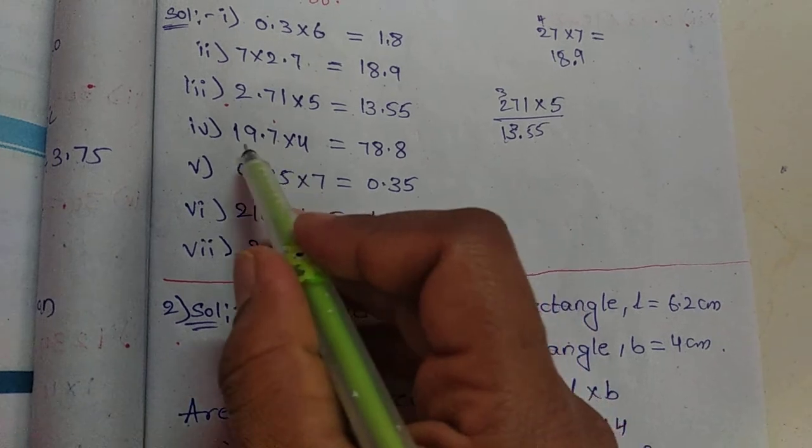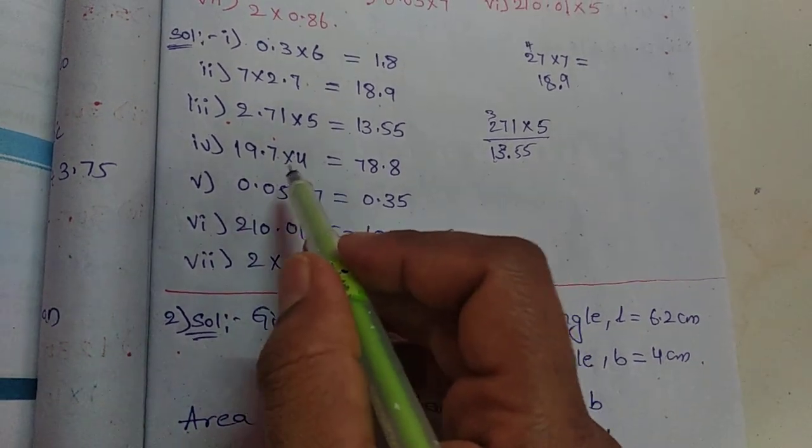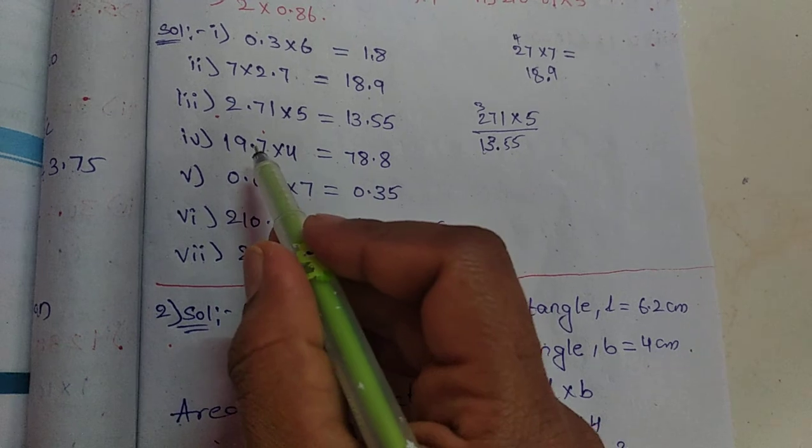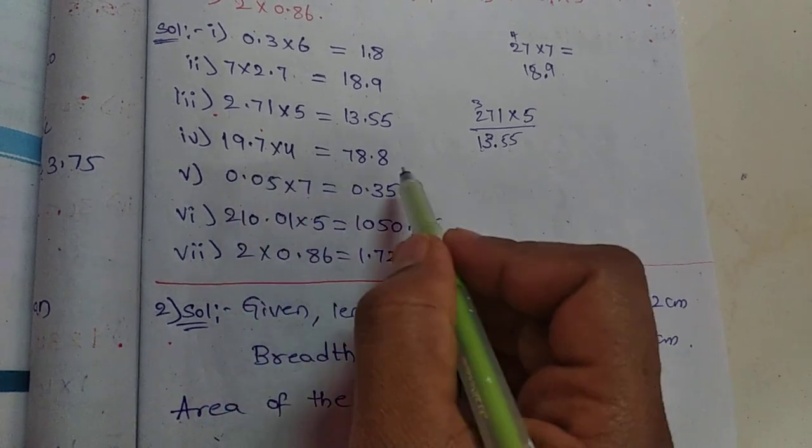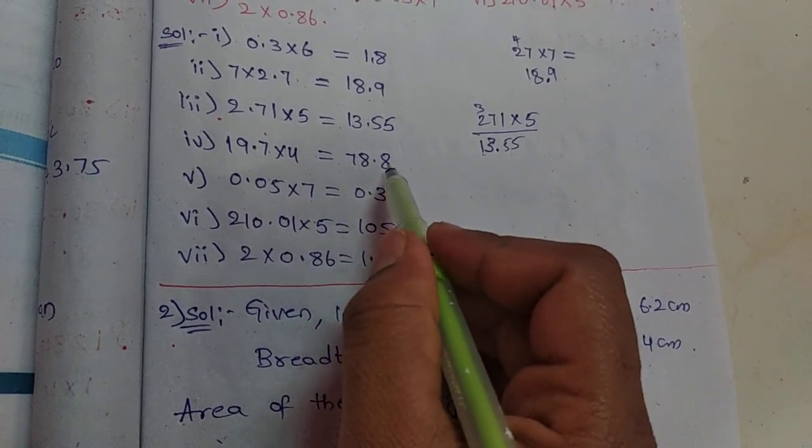Next, 19.7 into 4. Same way: multiply, then in the answer from the right side count one digit. So 78.8.